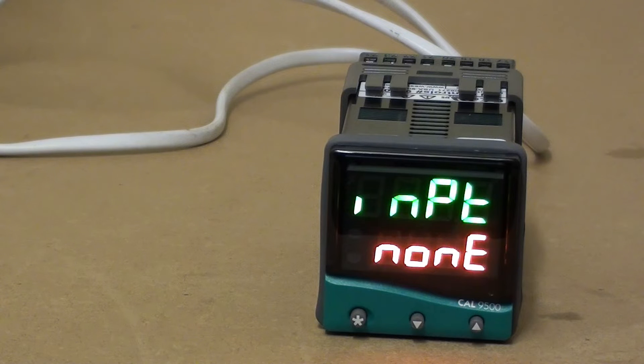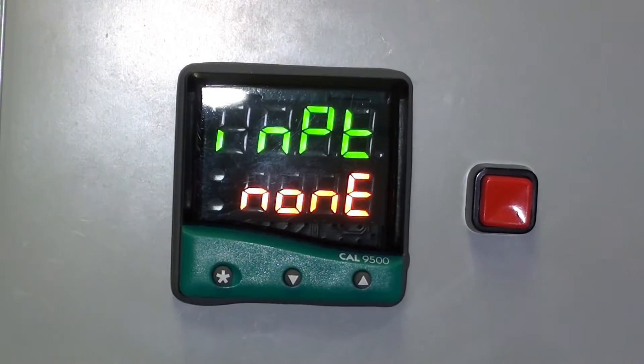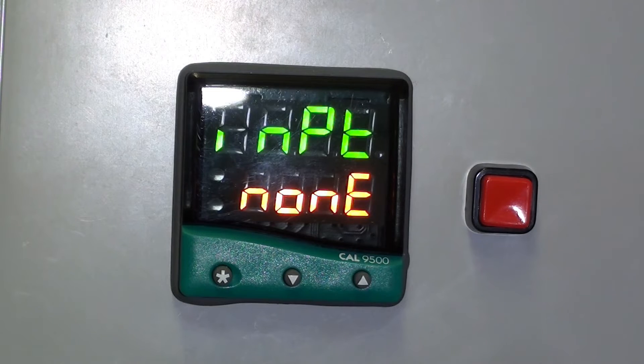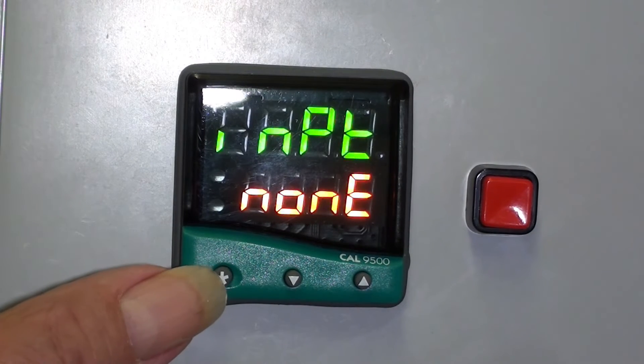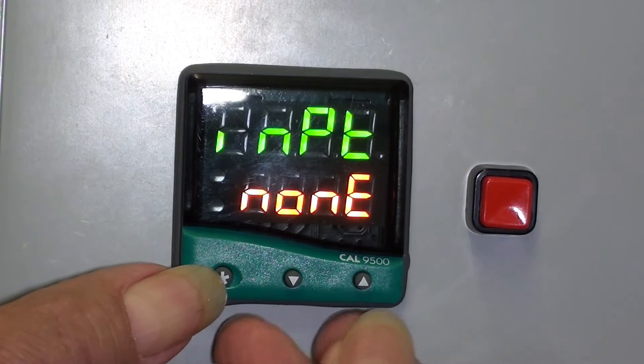This is a menu where we can set up the input, the type of input that's going to be applied to the controller. Here is where we can select the type of input signal. To enter the menu, press the star and the up arrow.